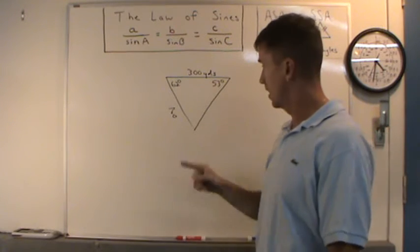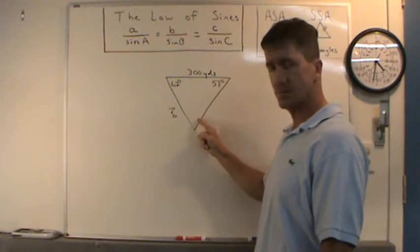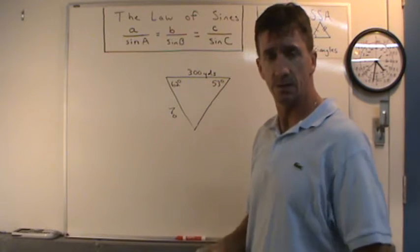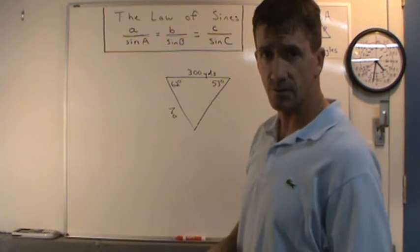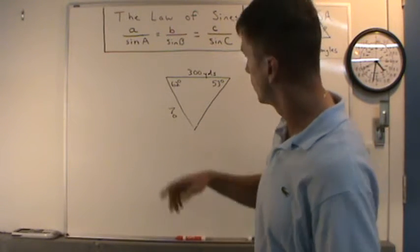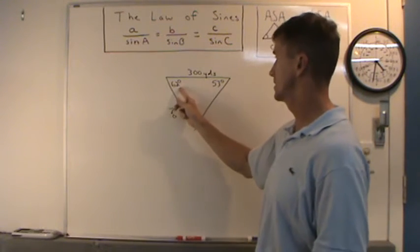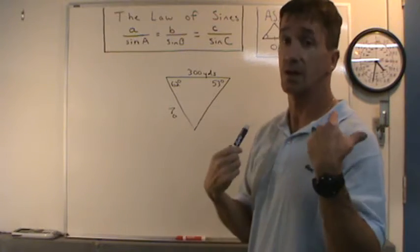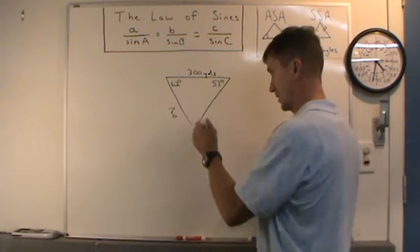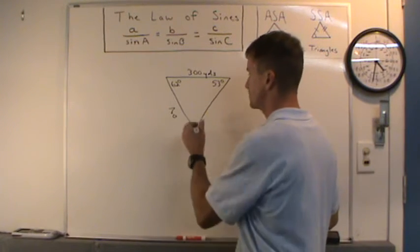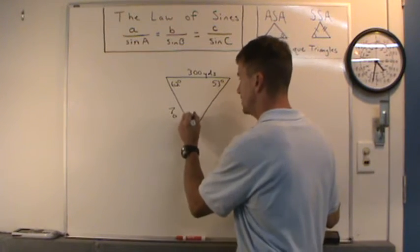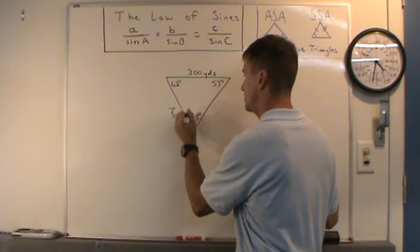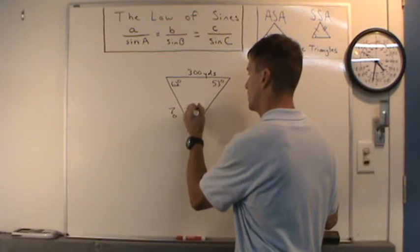Step one: find the third angle. All three angles in a triangle sum to 180 degrees. So 180 minus 62 minus 53 gives us 65 degrees. I'll put that in the sketch, so this angle is 65 degrees.